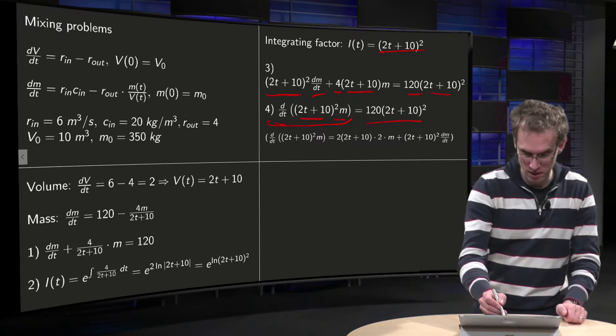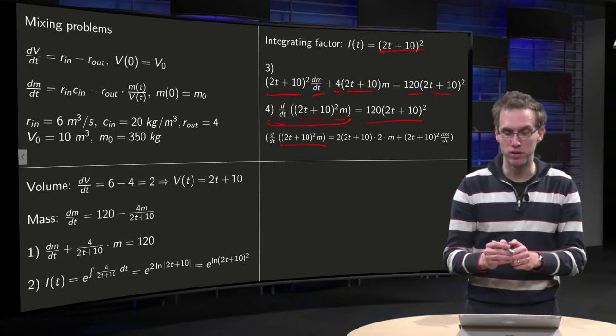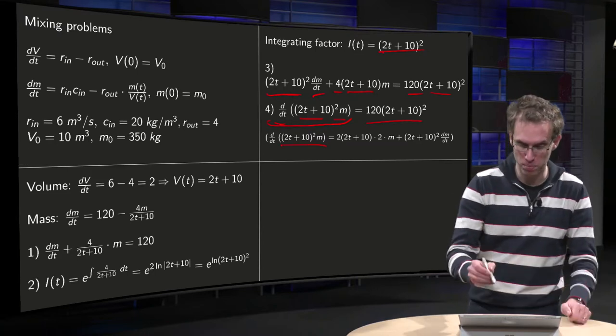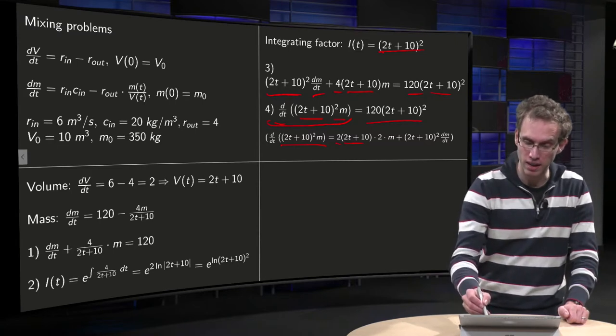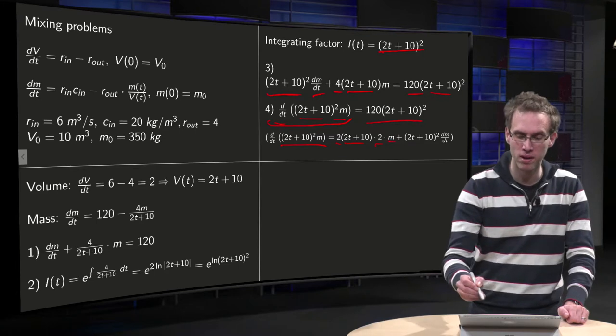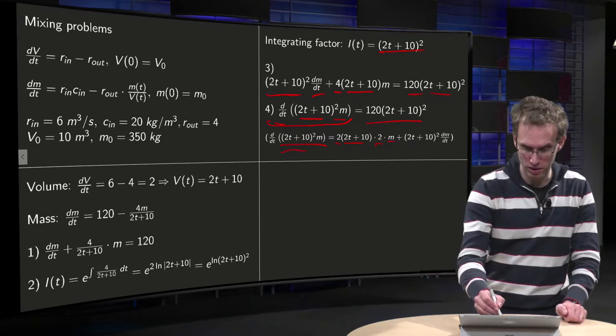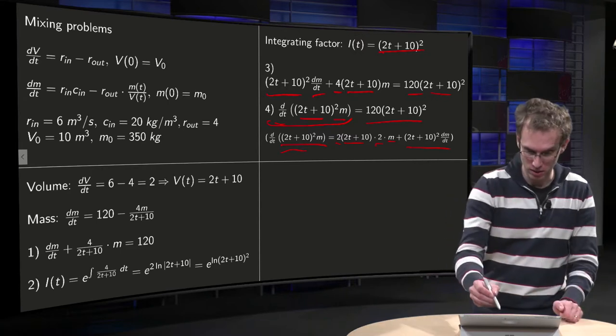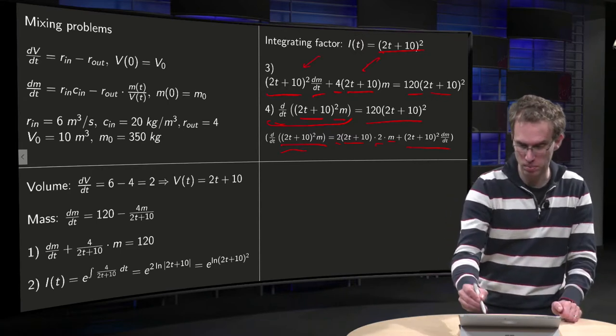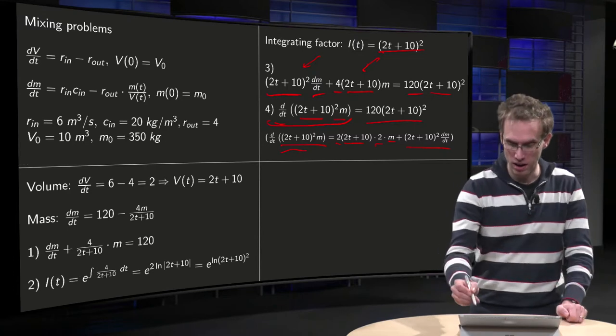Where this step from 3 to 4 is correct. By differentiating this left hand side using the product rule, you differentiate this term. First differentiate the first part. You get 2 times (2t + 10) times chain factor 2 times m. And then you leave this part times m prime. And indeed you see you get this term plus that term. So this step is correct.